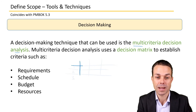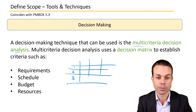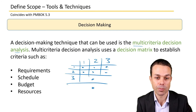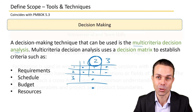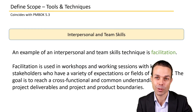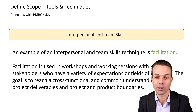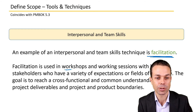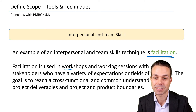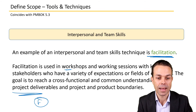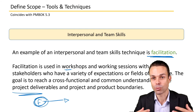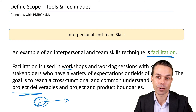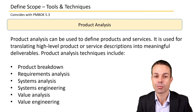Once we have alternatives, we use decision making — specifically multi-criteria decision analysis, where we have a decision matrix with criteria on one axis and options on the other, and we determine which option best meets the criteria. Interpersonal and team skills are needed to work with stakeholders and gather scope and requirements information. Facilitation is used for workshops or working sessions with key stakeholders who have a variety of expectations and expertise — the goal is to reach a cross-functional, common understanding of the project deliverables and ensure everyone is on the same page.